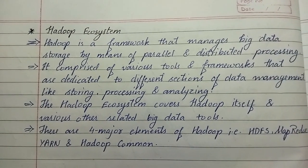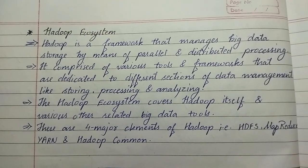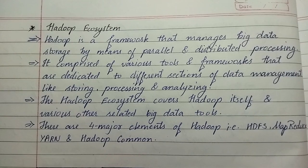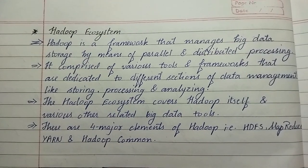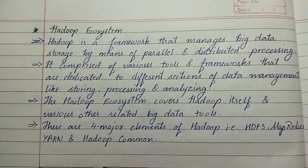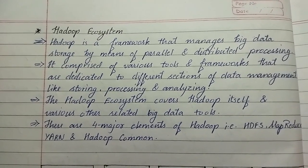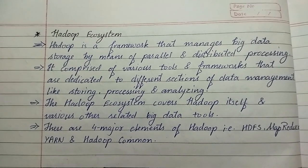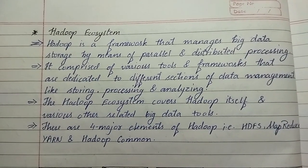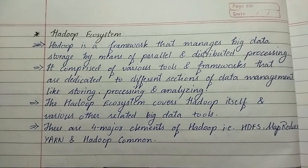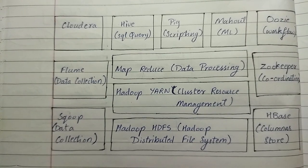Welcome back to the channel. Today we are going to see about the Hadoop ecosystem. Hadoop is a framework that manages big data storage by means of parallel and distributed processing. It is comprised of various tools and frameworks dedicated to different sections of data management like storing, processing, and analyzing. The Hadoop ecosystem covers Hadoop itself and various other related big data tools. There are four major elements of Hadoop: HDFS, MapReduce, YARN, and Hadoop Common.